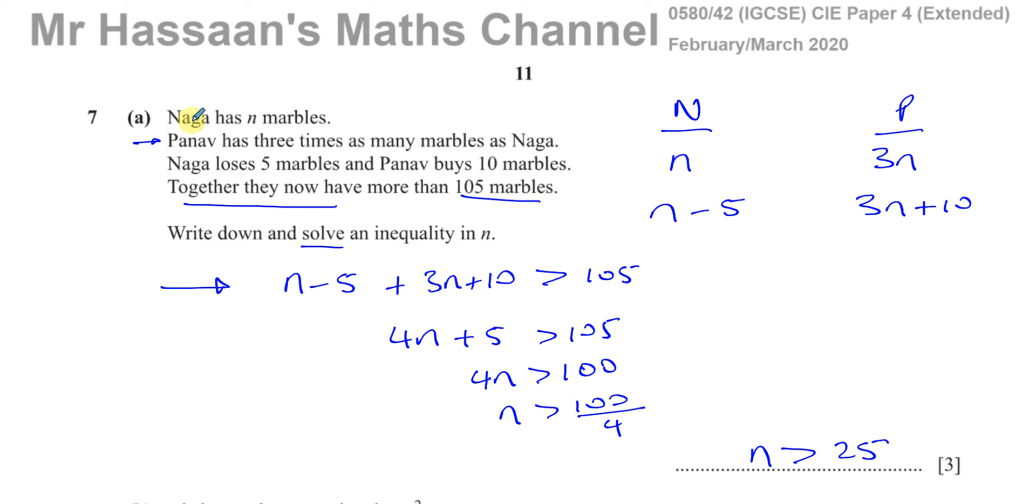So Naga has N marbles. Panav has three times as many marbles as Naga. So we have to translate this English sentence into maths. What does that mean? That means three times N. Then Naga loses five marbles. How do you translate that into maths? If he has N marbles and loses five marbles, well, that's N minus five. That's how you translate that from English into maths.